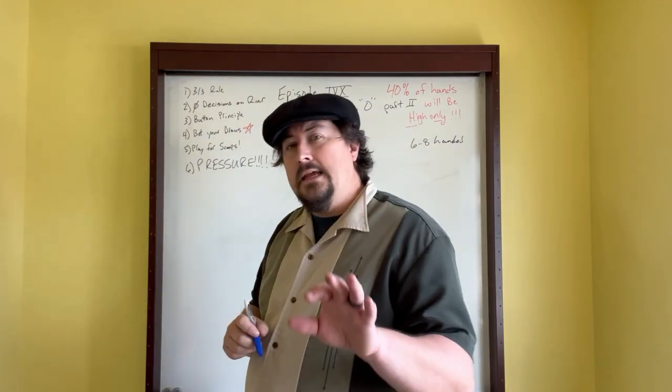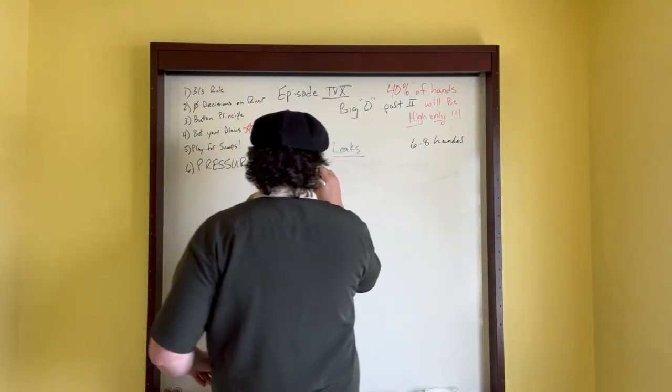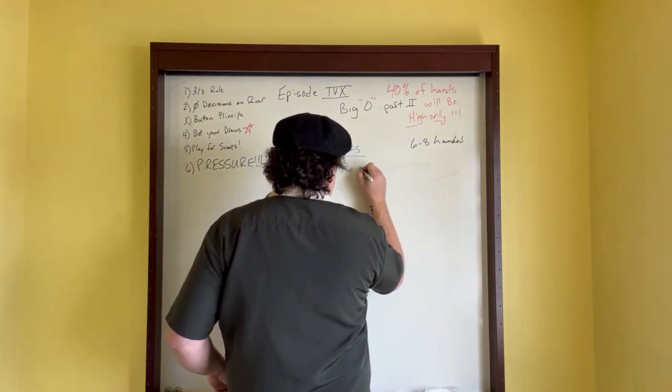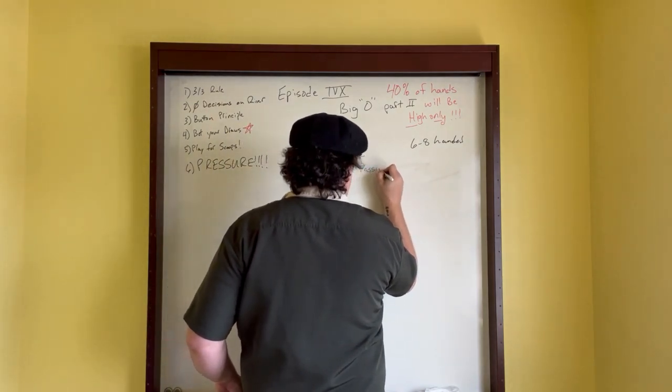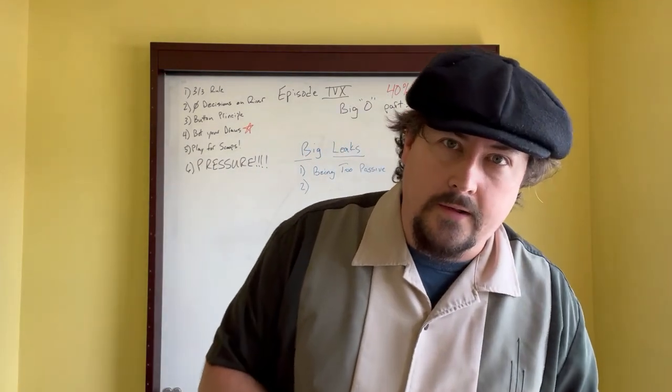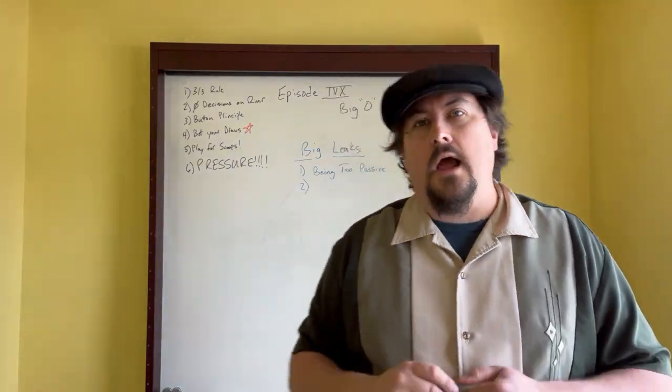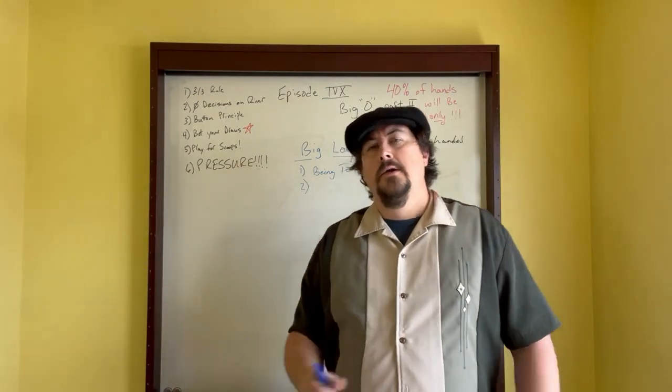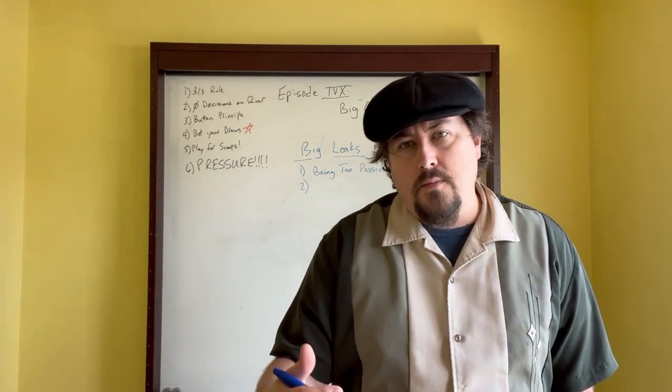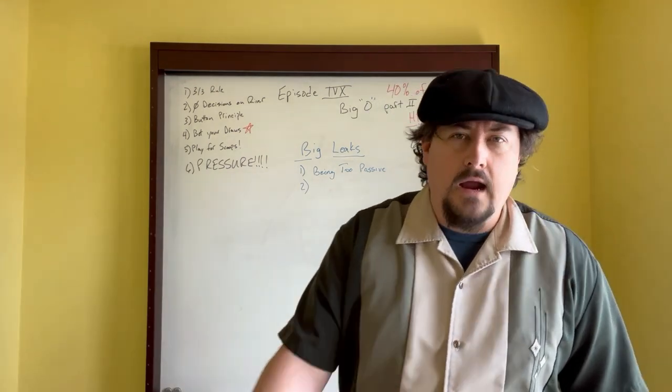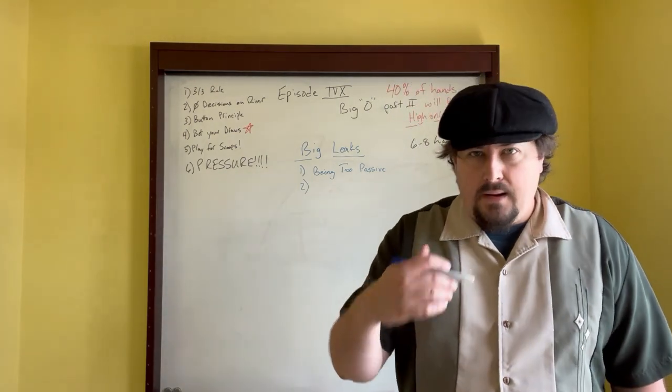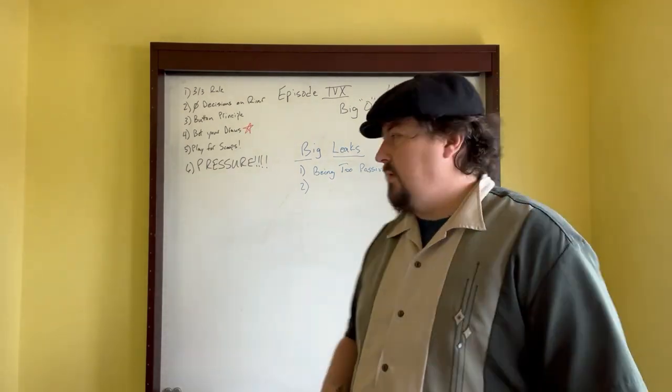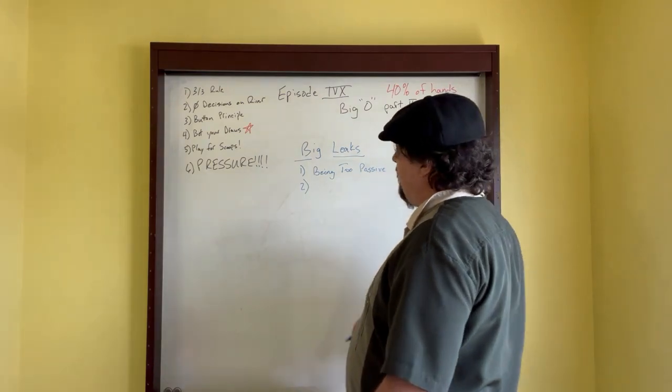One of the biggest leaks, and I've touched up on this already, is being too passive. If you find yourself calling a lot, you are not playing Big O appropriately. I know that might drive some of you nuts, because you're like, Professor, why should I bet my draws? Well, if you're playing it appropriately, you should have enough equity in the pot that you can pot it, that you can push your draws to the limit.